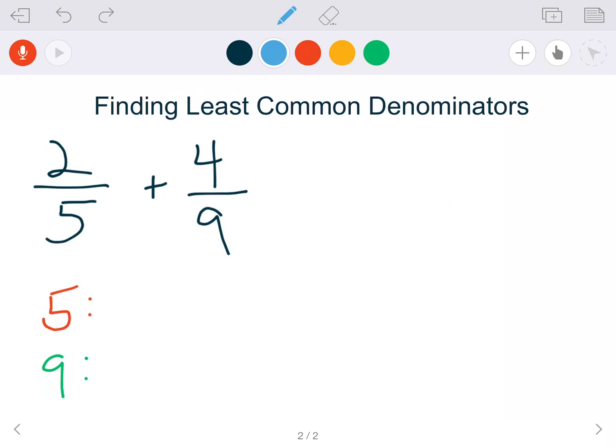The first thing you want to know is what are the denominators. I listed them below - I listed 5, and then I listed 9 right below it.